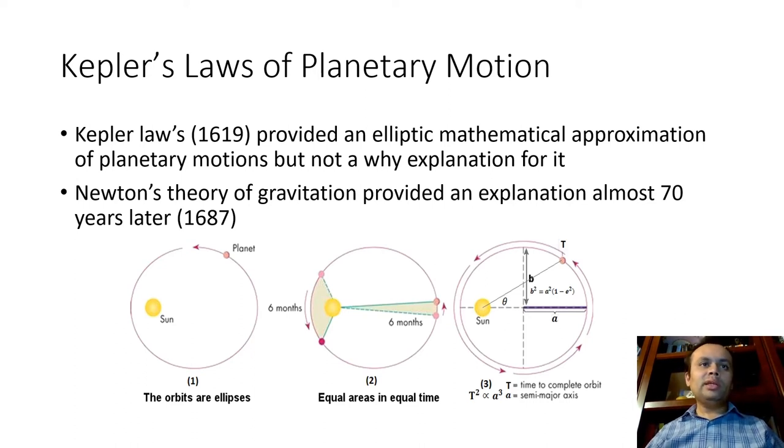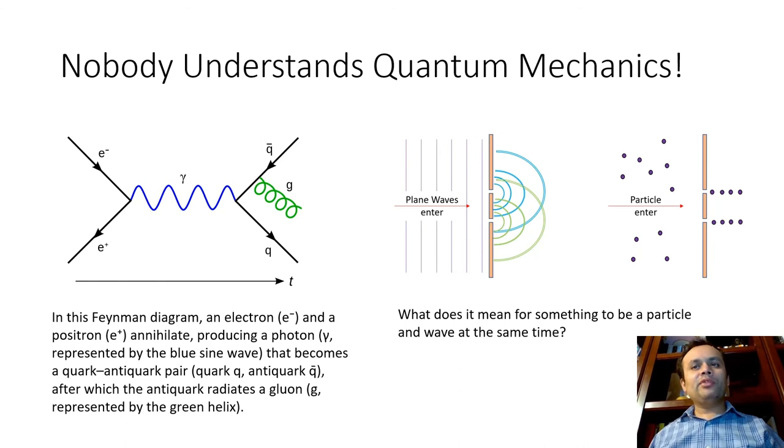It took more than 70 years before Newton came up with the theory of gravitation, which not just explained the laws of the planets, but it also explained a host of other phenomenon. So, here's an example of a black box explaining black boxes in case of Kepler laws. And it took Newton's theory of gravitation to provide a real concrete explanation rooted in ontological phenomenon.